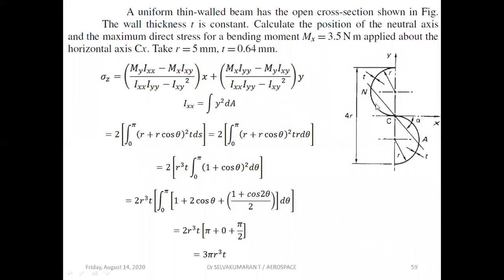Take a small element at angle θ along the curved section. The y-coordinate is r + r·cosθ, and the area element is t·ds where ds = r·dθ. So Ixx uses (r + r·cosθ)² · t · r·dθ. Expanding: (1 + cosθ)² = 1 + cos²θ + 2cosθ, and cos²θ = (1 + cos2θ)/2. Since there is an identical section above and below the axis, multiply by two and integrate.